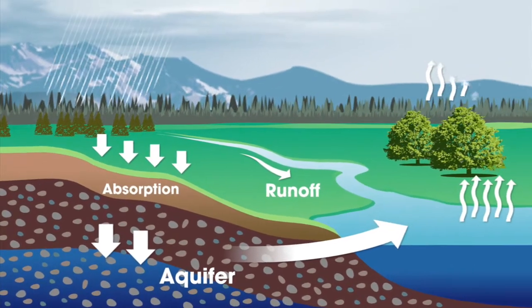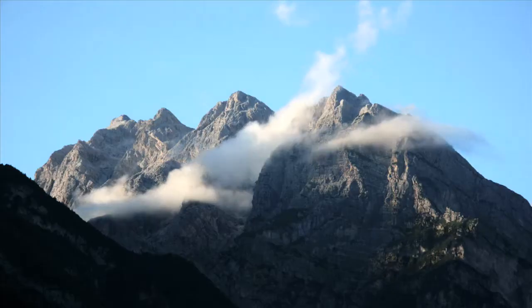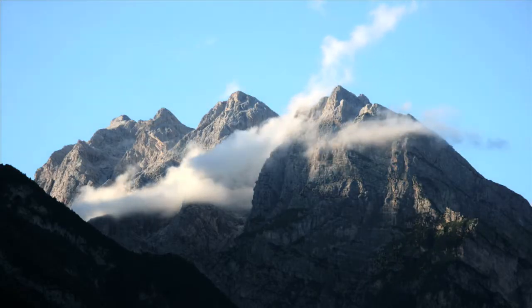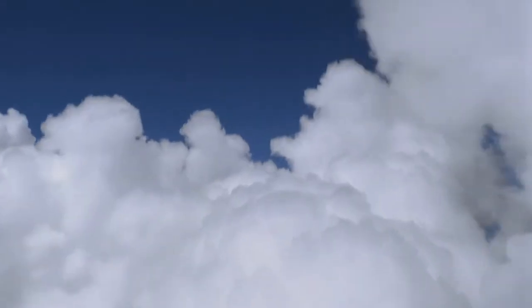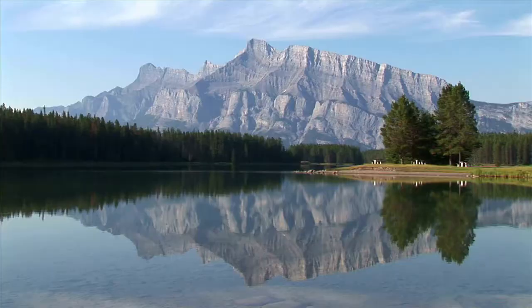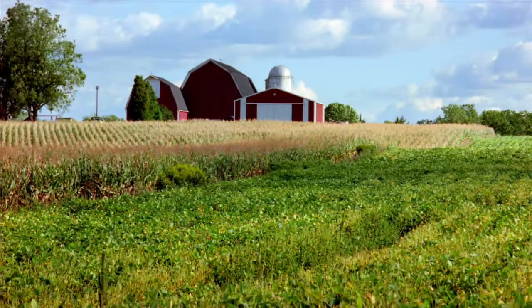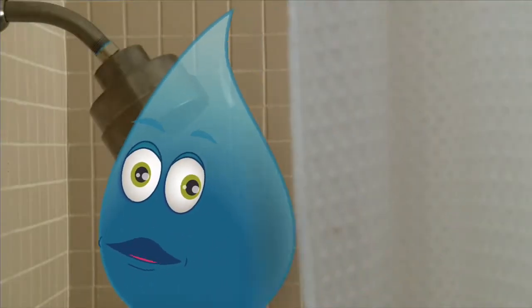To complete the water cycle, groundwater seeps back into surface water and the whole process begins again. To review: evaporated surface water rises as vapor, collects in a cloud, and falls to earth as rain or snow. Some of the water runs off into lakes, rivers, or the ocean; some is absorbed into the ground, where it eventually seeps into surface water. Simple! No problem — I'm hitting the shower.